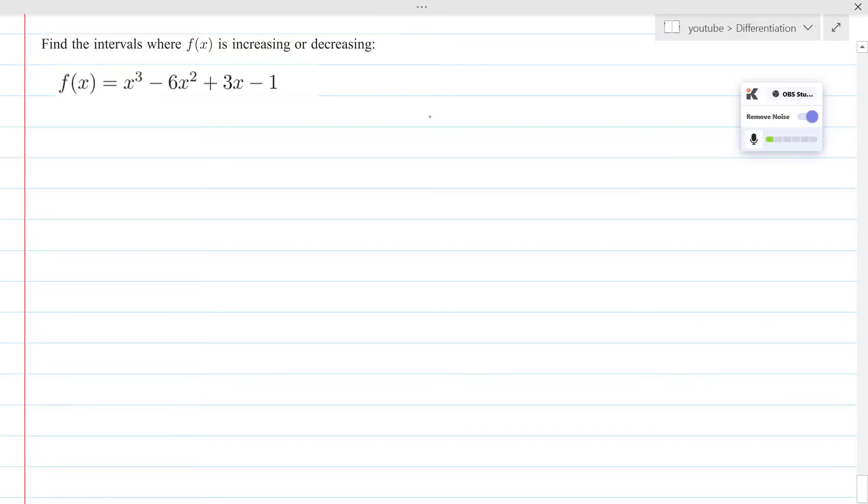Hello everyone, in this video we will be finding the intervals where the function f(x) is increasing or decreasing. Our function is given as f(x) = x³ - 6x² + 3x - 1.